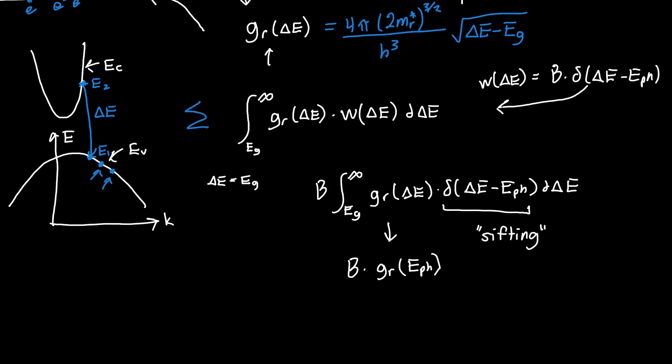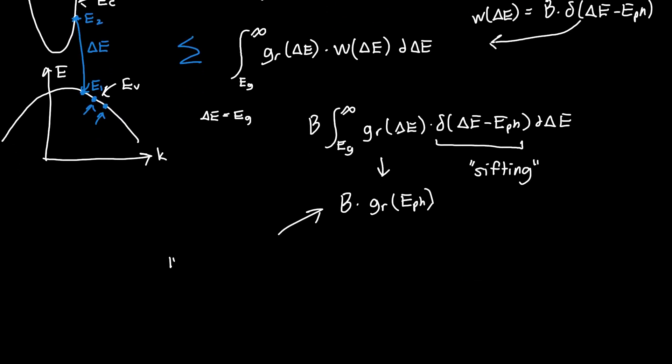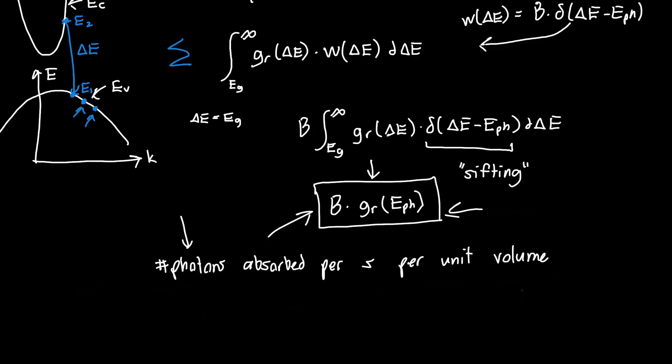And so this is basically our final answer. This is the number of photons absorbed per second per unit volume. This is the answer that we've been looking for. This is how light interacts with matter, or at least how matter absorbs light.